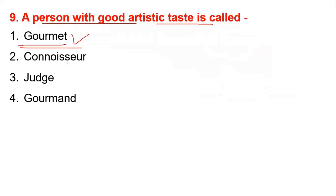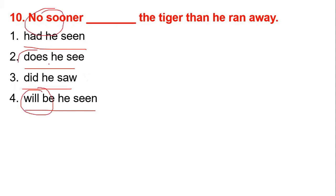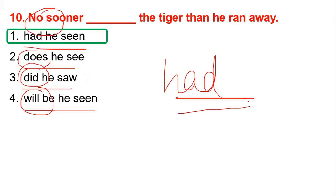No sooner dash the tiger than he ran away. No sooner did he see the tiger than he ran away. The options are: does he see, did he saw, will he be seen. No sooner is always followed by 'had,' so the answer is: No sooner had he seen the tiger than he ran away.